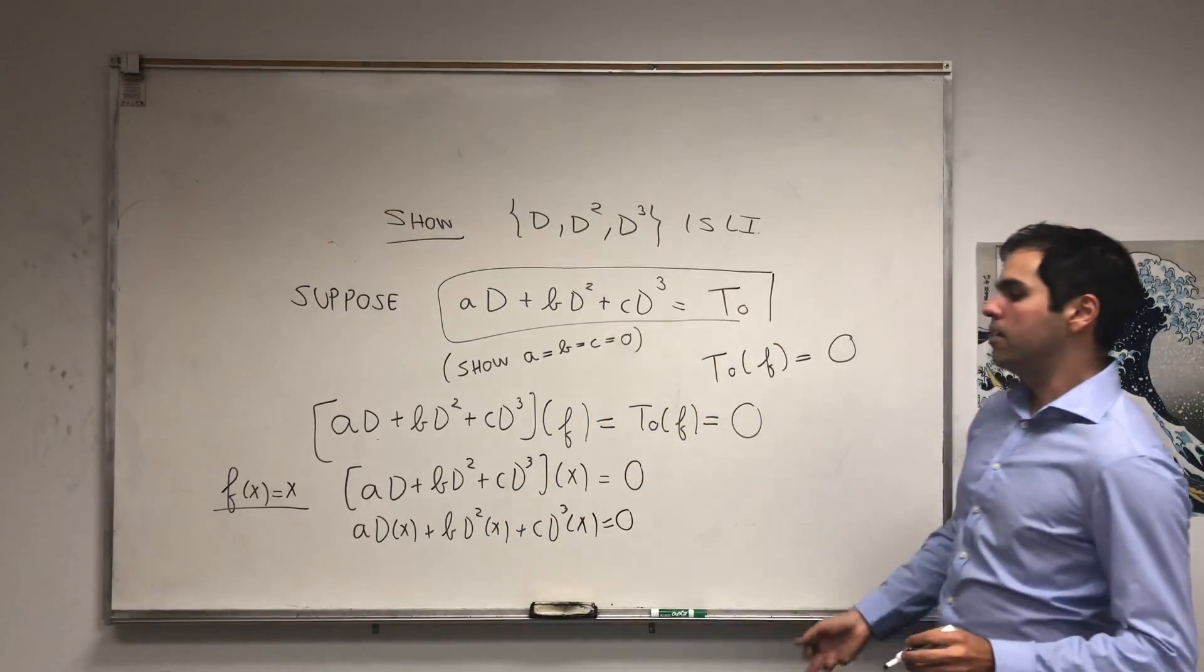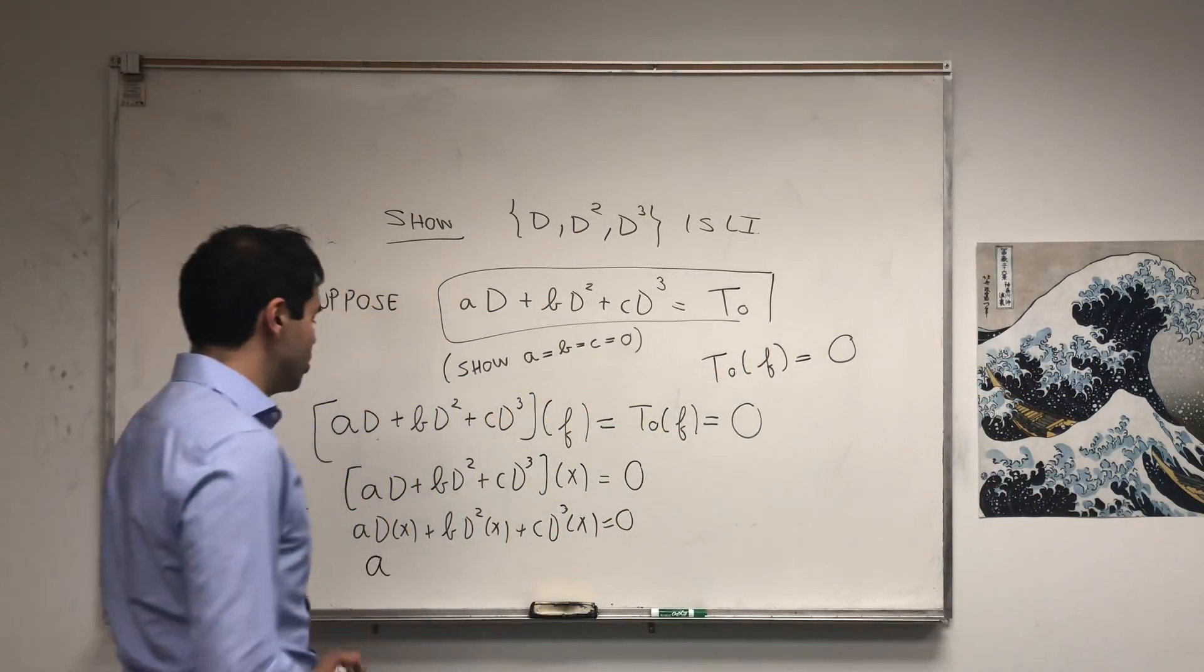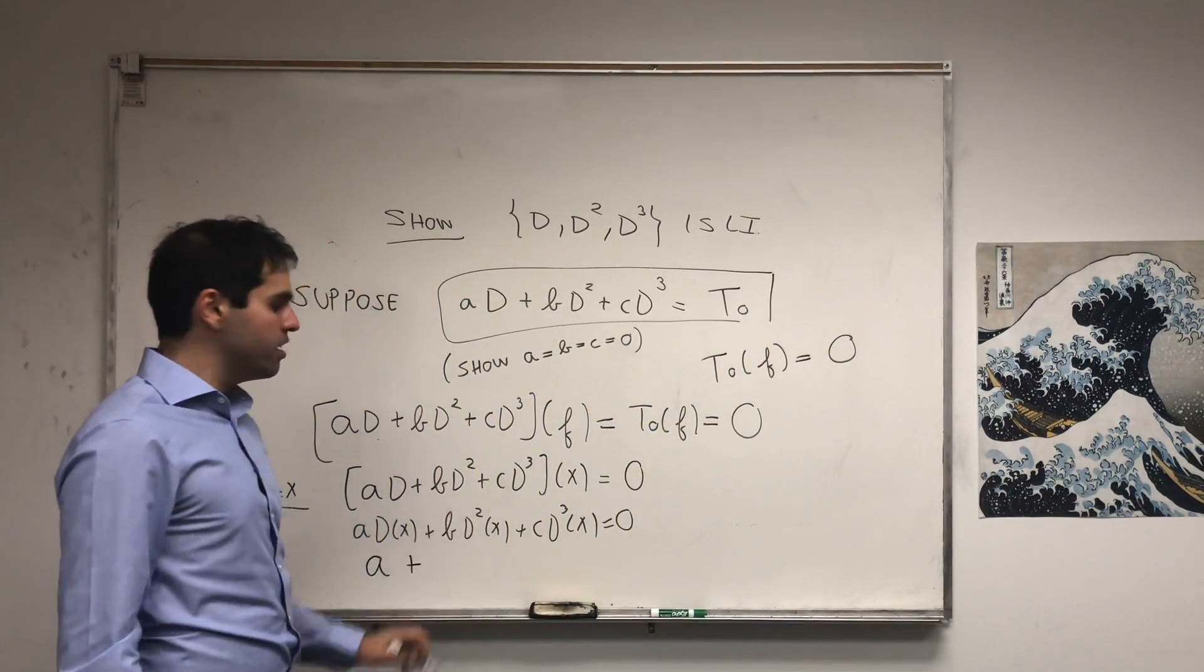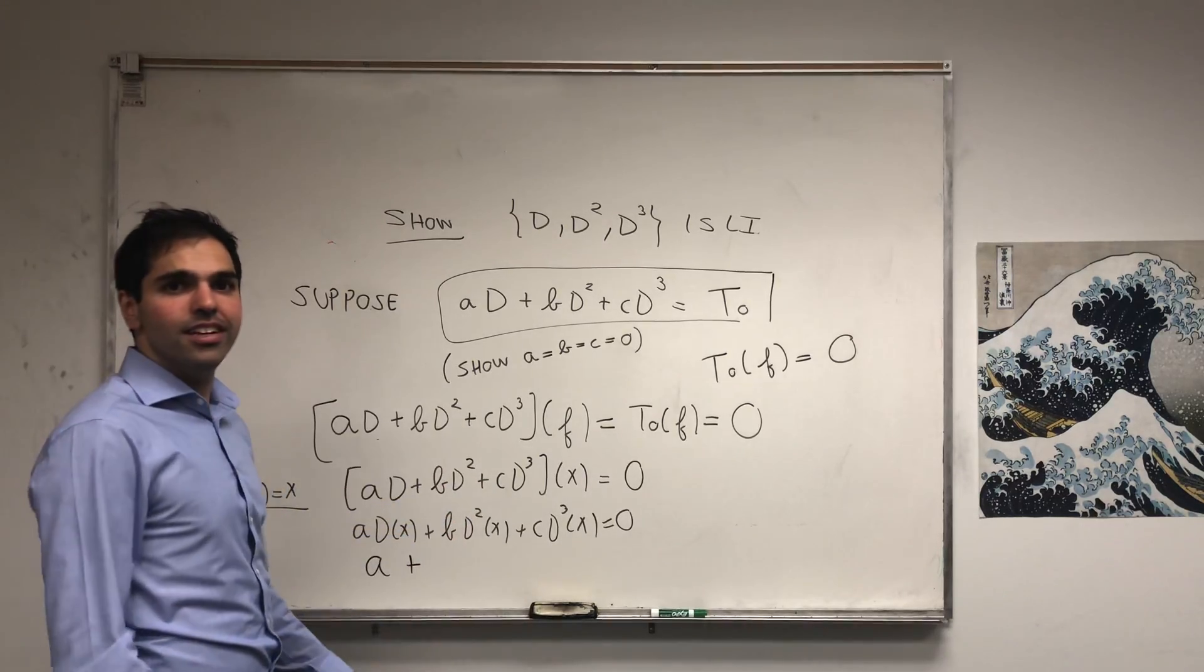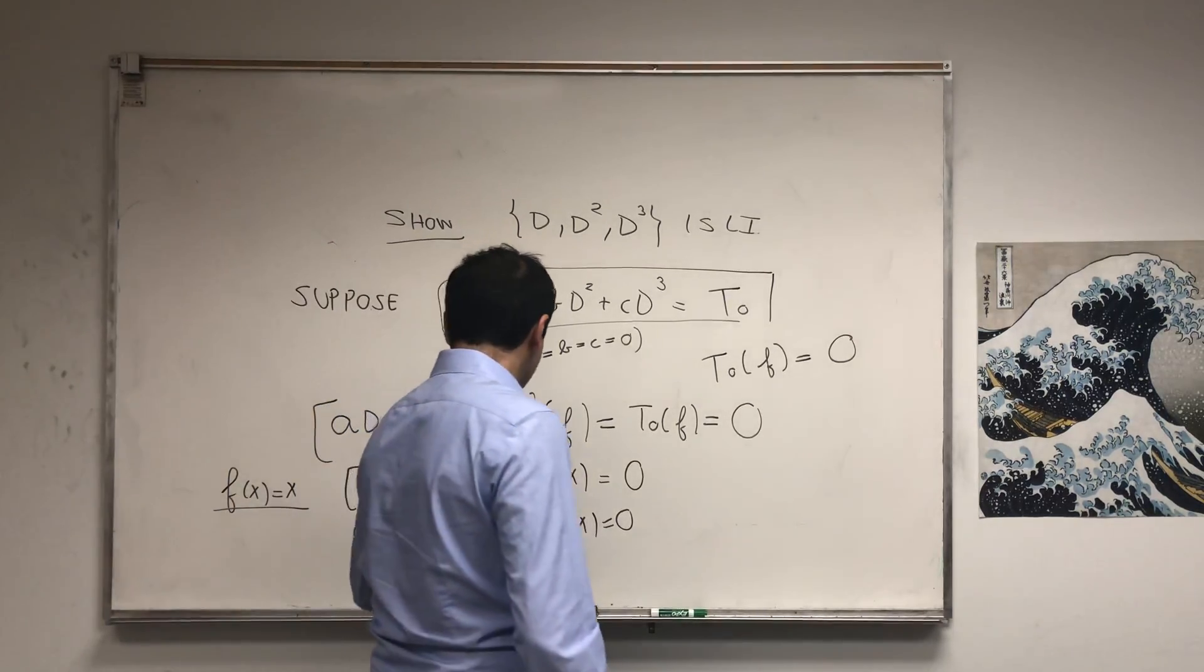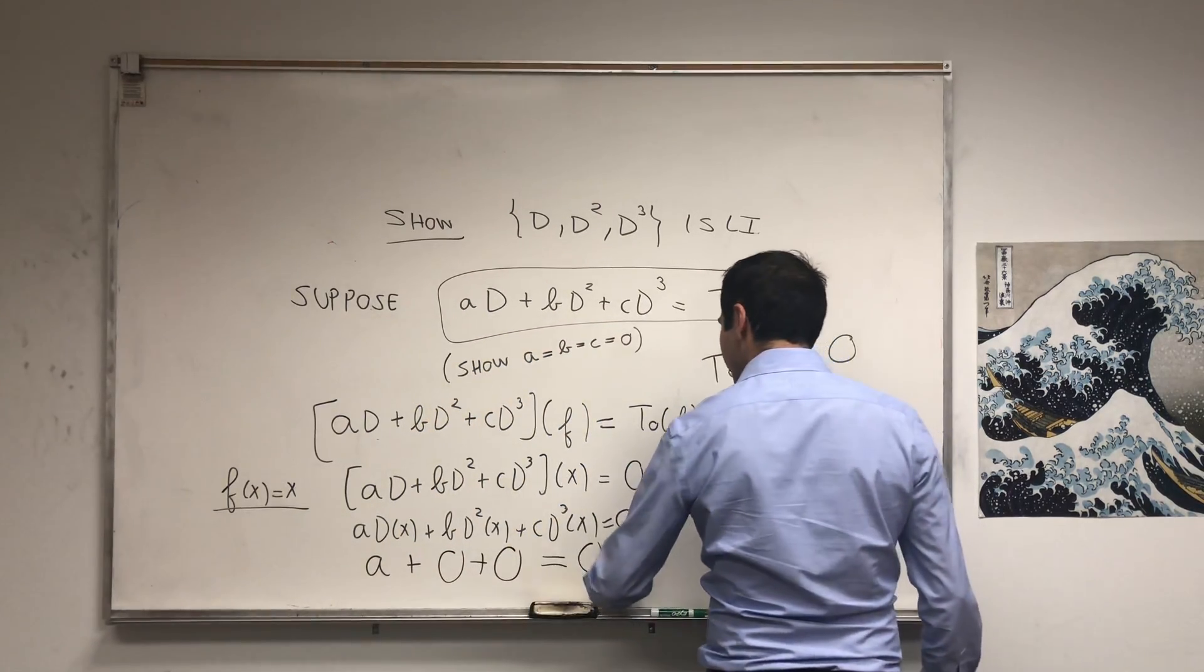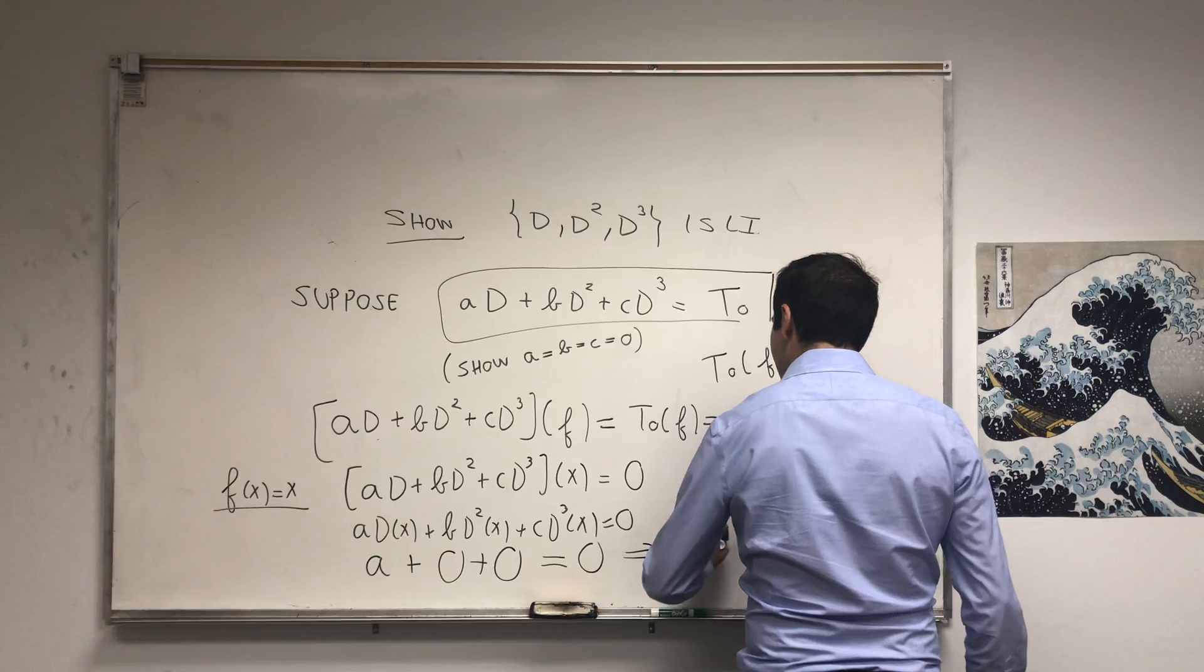Now if you differentiate x once, you get one, so a times one, which is a. If you differentiate x twice, you get zero. If you differentiate x thrice, you get zero. So a + 0 + 0 is zero, so in fact a equals zero.